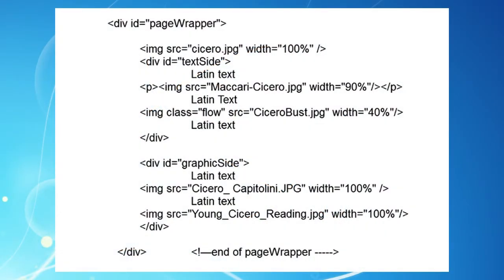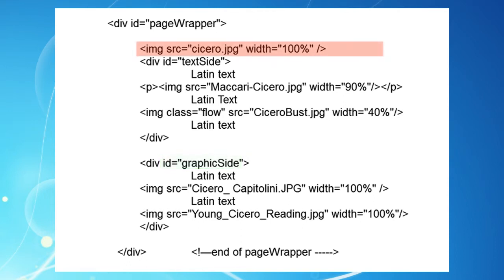In the page body, there are three main containers or divs. We've identified them with IDs as page wrapper — the main page container which holds the other two — text side and graphics side. If you look at the images, you will see that none of them has a fixed pixel size. They're all percentages.